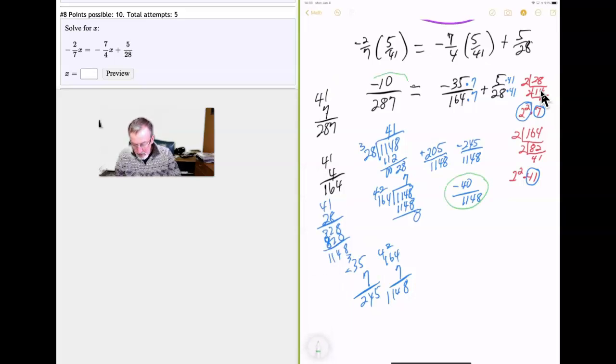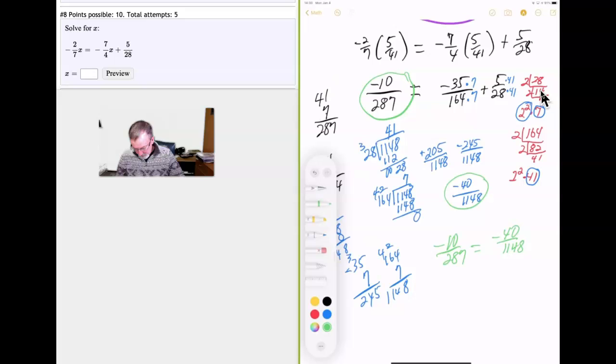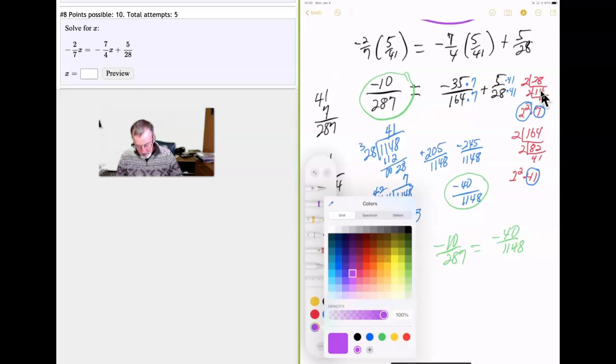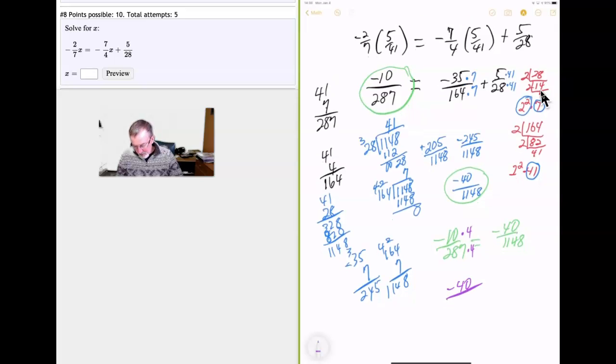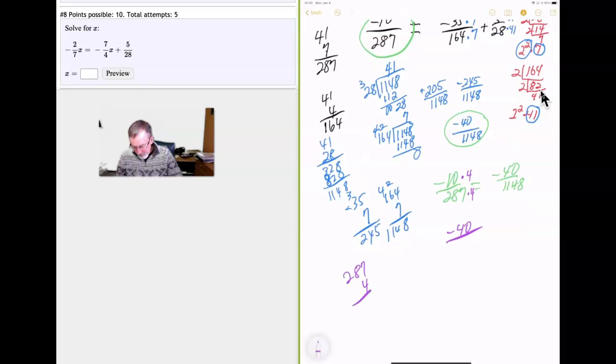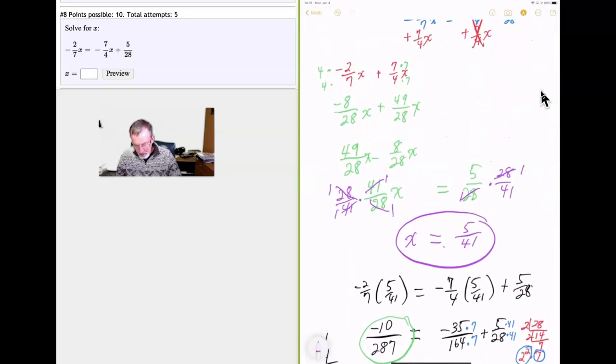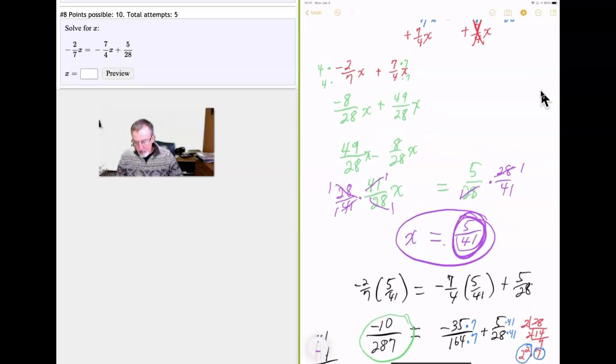This number is supposedly equal to this. So, let's see if it is. Is negative 10 over 287 equal to negative 40 over 1148? So, we need to multiply the top and the bottom here by numbers that will give us the same numerator and denominator. And I think that's going to be 4. So, 4 times negative 10 is negative 40. And how much is 4 times 287? 4 times 7 is 28. Carry the 2. 4 times 8 is 32. Plus 2 is 34. Carry the 3. And 4 times 2 is 8. Plus 3 more is 11. So, there's our lucky number. 1148. And that's equal to negative 40 over 1148. So, this is correct. The answer we got up here. X is equal to 5 over 41. That is the correct answer.